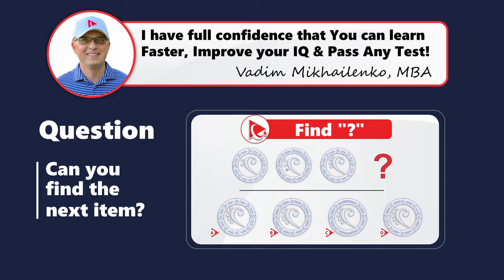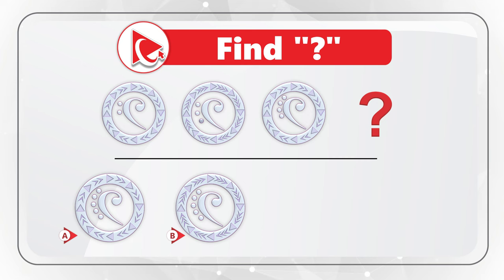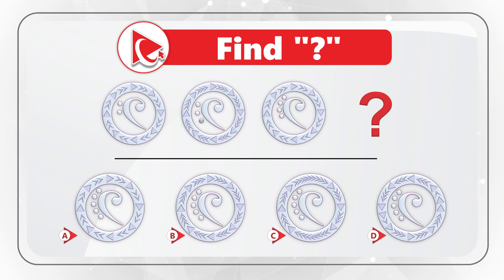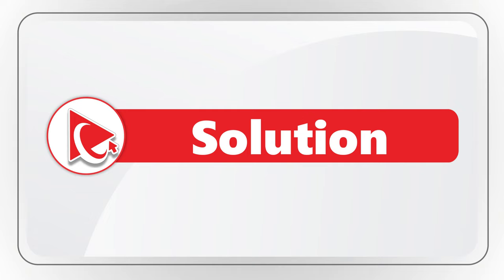Let's look at a very interesting question which really makes you think. You are presented with three shapes and the fourth shape is missing. You need to select the missing shape out of four different choices: A, B, C, and D. Take a close look at the pattern of shapes to see if you can come up with the solution. I'm moving forward to share with you my version of the solution, and obviously if you think differently, please make sure to share your answer in comments.